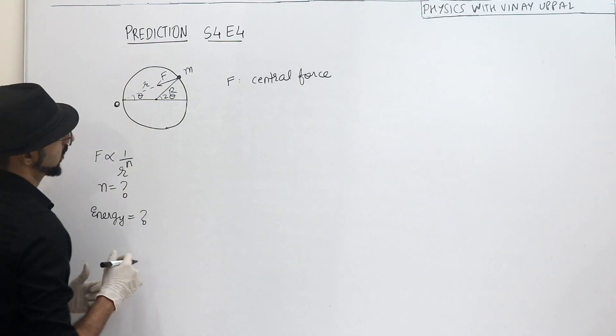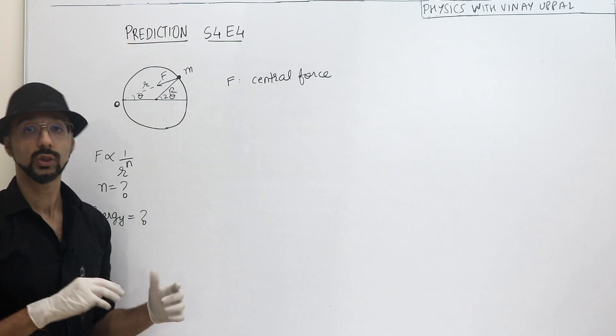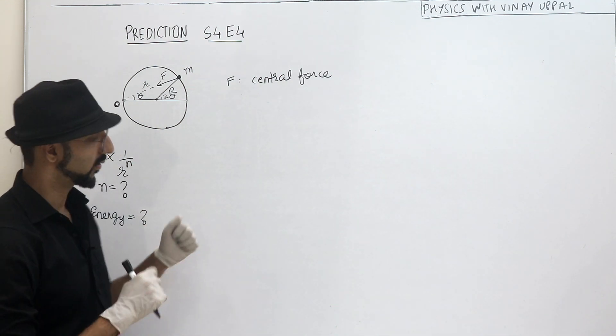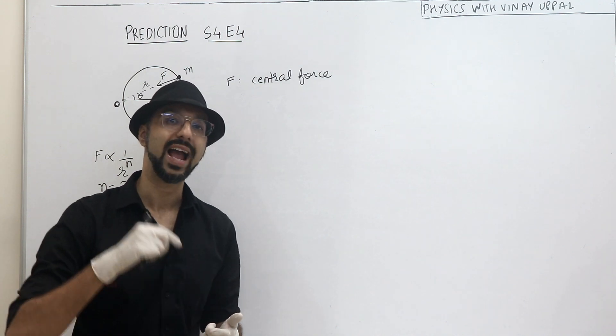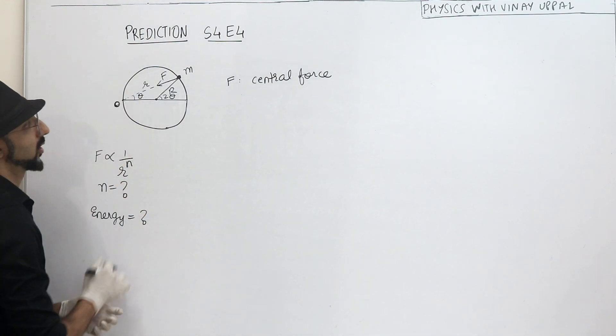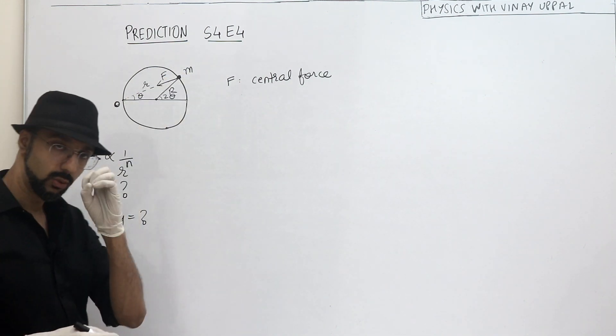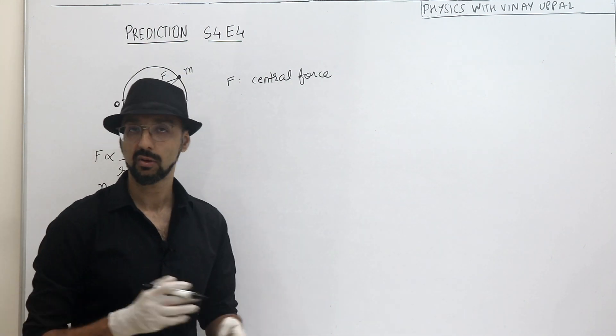So first thing, what can we conserve? Energy is conserved because central force is a conservative force. And I can also conserve angular momentum of the particle about the point O, because the force is always towards that point. So torque about that point will be 0, and therefore I can conserve angular momentum about that point.